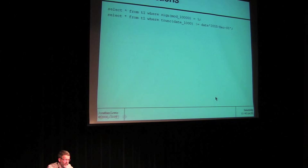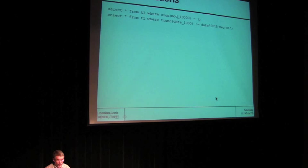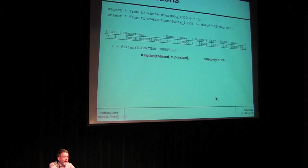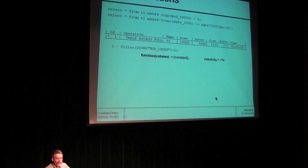What happens when you start using functions? SELECT FROM t1 WHERE SIGN(mod_10000) = 1. The sign is 1 if the value is positive, minus 1 if negative, and 0 if zero. So what do we expect for the number of rows where SIGN(mod_10000) is 1? A few extra experiments with variations in data show that function_of_column equals constant — Oracle hasn't got a clue. It says 1%. Which means if you run three queries against this data, Oracle says 1% of your data is positive, 1% is negative, and 1% is zero — and God knows what happens to the other 97%. This is clearly not good. At some stage, you will write a query where you get a bad plan.